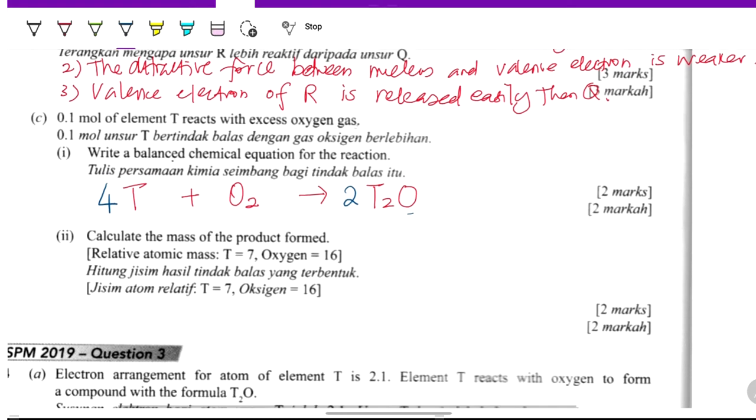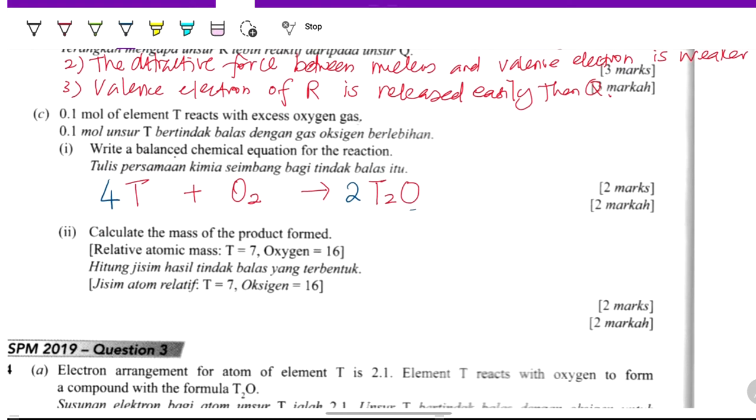Next, calculate the mass of the product formed. Mass of the product formed is for this one. Given to you is element T is 0.1 mole.